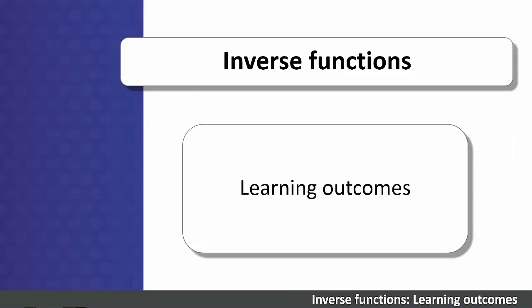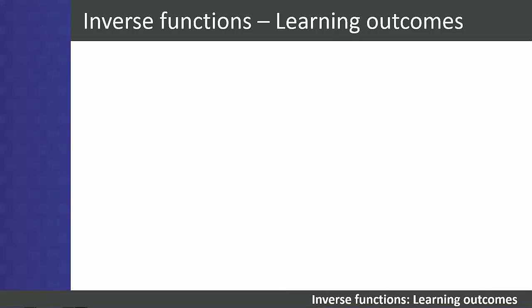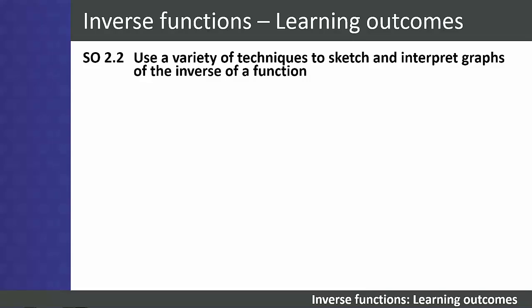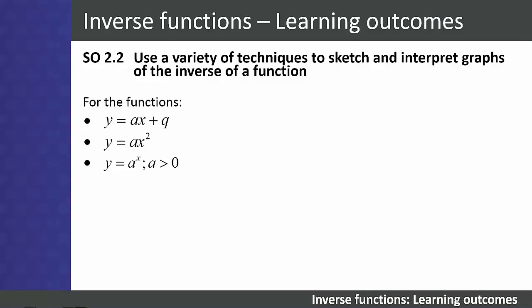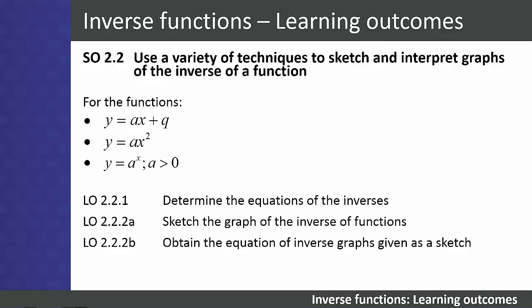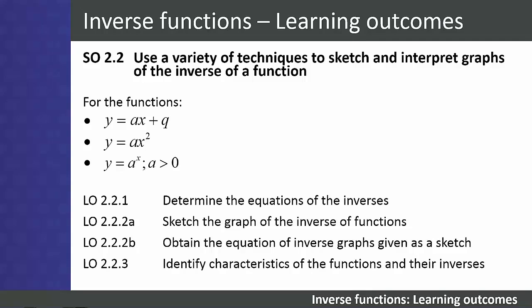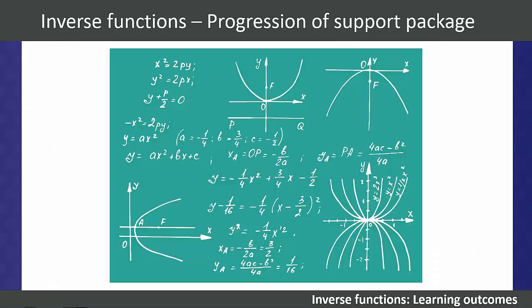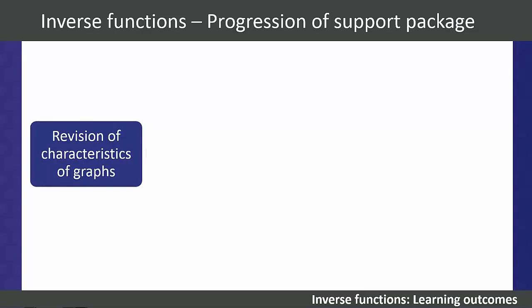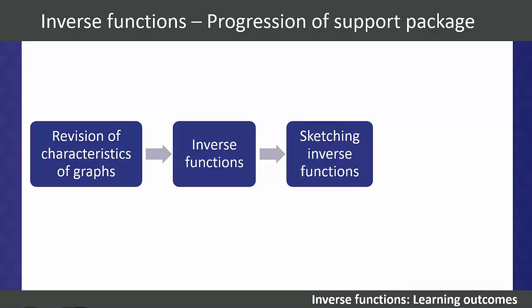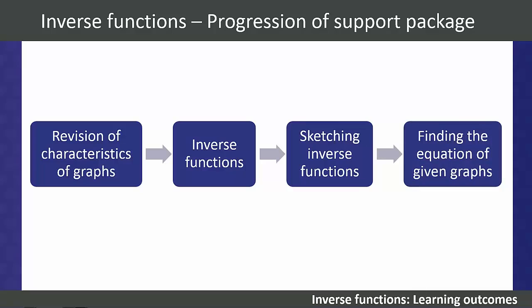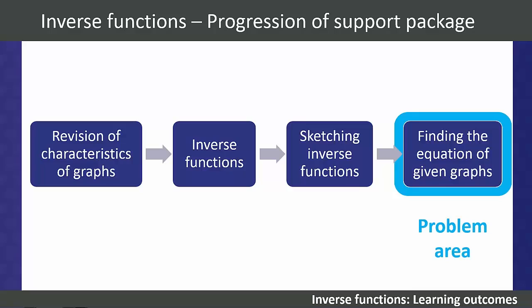Let's take a look at Subject Outcome 2.2 and its Learning Outcomes in more detail — found on page 6 of your Subject Guidelines. Subject Outcome 2.2: use a variety of techniques to sketch and interpret graphs of the inverse of a function, for y = ax + q, y = ax², and y = aˣ where a > 0. Students should be able to determine equations of inverses, sketch inverse graphs, obtain equations from given sketches, and identify characteristics of functions and their inverses. Lecturers noted that finding the equation from a given graph is one of the most challenging aspects for students.